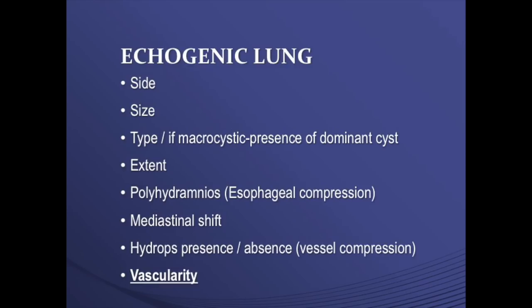It can be microcystic or macrocystic. If it is macrocystic, then you look at the presence of a dominant cyst, the extent of the lesion whether it is affecting the entire lung or part of a lung, presence or absence of polyhydramnios — which occurs because of esophageal compression — mediastinal shift if any, and the presence or absence of hydrops, which happens because of vessel compression.